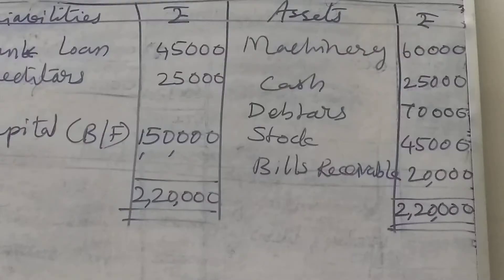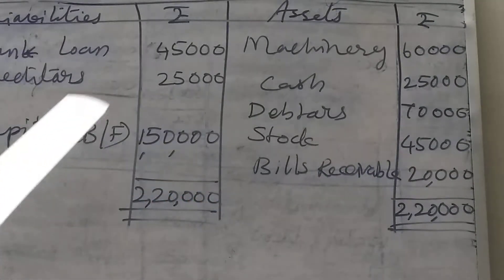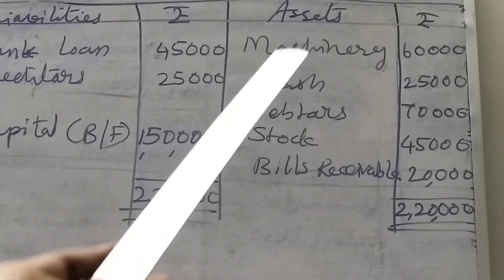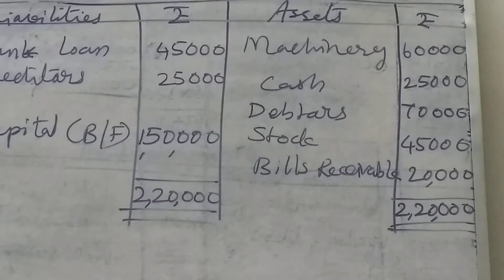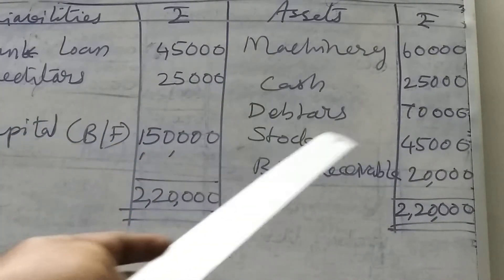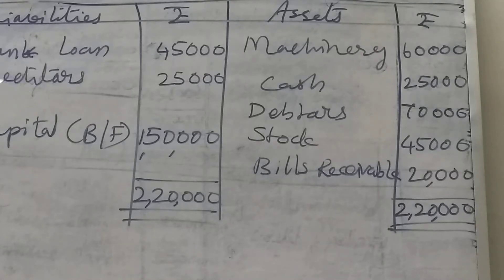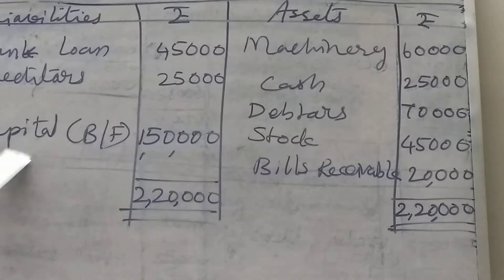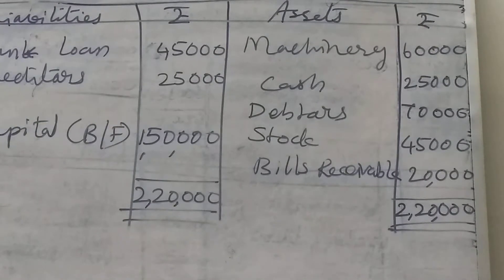Now go to the board. Statement of affairs on 1-1-2018. All the opening balances: machinery 60,000. We have to enter all opening balances on the asset side and liabilities on the liability side. Cash 25,000, debtors 70,000, stock 45,000, bills receivable 20,000. Bank loan 45,000 and creditors 25,000 on the liability side. Considering only opening balances, we can find out the capital balance: 1,50,000.